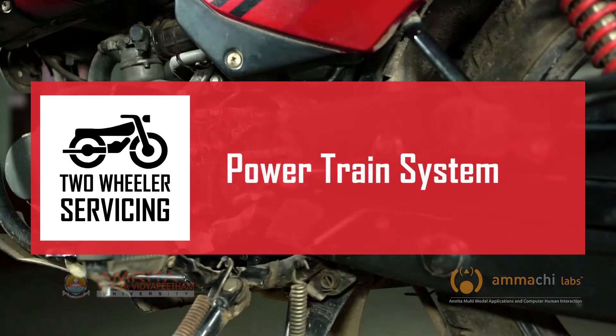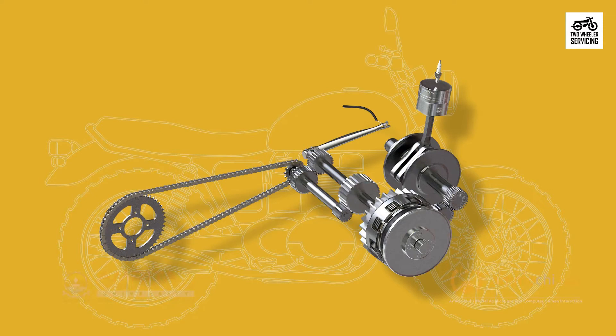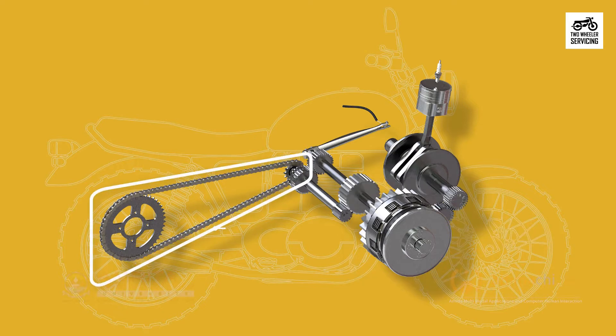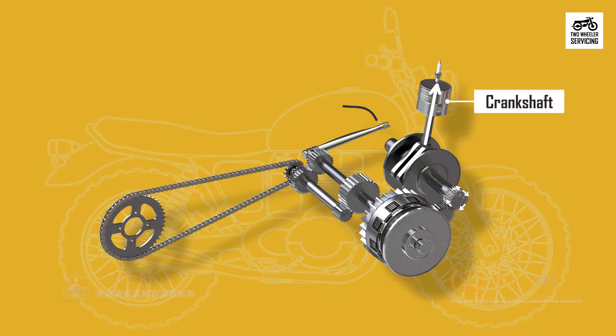In an earlier session on the working of an engine, we learned how an engine generates power. In this session, we will learn about how that power can be transferred to propel the vehicle. The powertrain system consists of a gearbox, clutch, and a chain drive. The rotations generated by the engine crankshaft are transmitted to the gearbox.